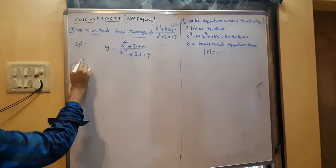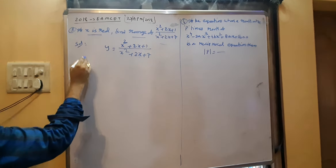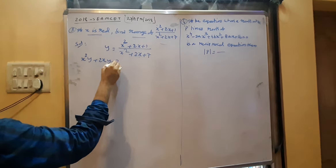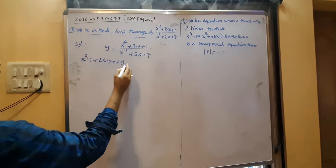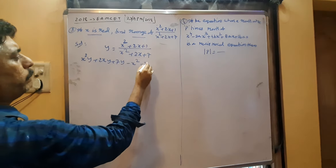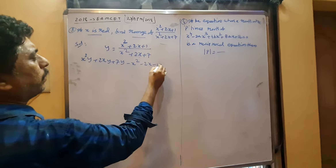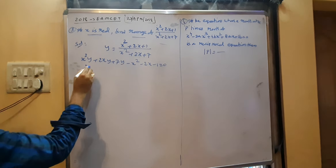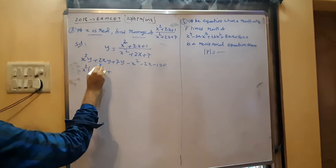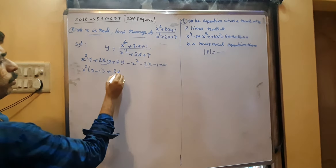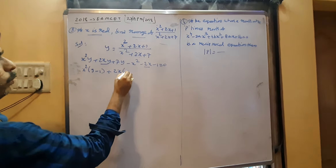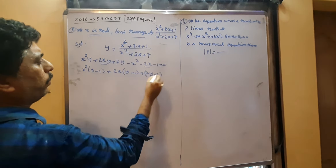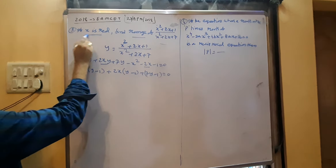Cross multiplying: x²y + 2xy + 7y = x² + 2x + 1. Rearranging: x²(y − 1) + 2x(y − 1) + (7y − 1) = 0.